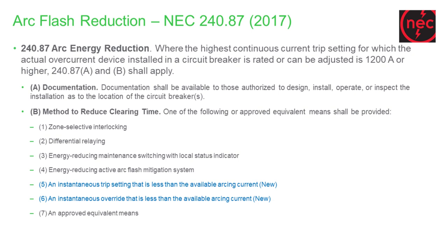Let's see what the standard tells us. NEC 240.87 recommends that if we are dealing with 1200 amp breakers and higher current, we must use one method of reducing the arc or reducing the clearing time. The recommended methods are: zone-selective interlocking, differential relaying, energy reduction maintenance switch (ERMS), using arc flash protection, and recently added — instantaneous override overcurrent, and a fully equivalent method, which is a written agreement between the engineer and operator.